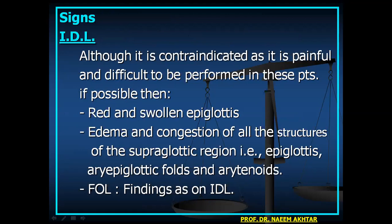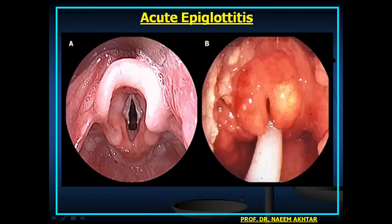if possible, indirect laryngoscopy will show a red and swollen epiglottis, with edema and congestion of all supraglottic structures: the epiglottis, peri-epiglottic folds, and arytenoids. Fiber optic laryngoscopy shows the same findings. In acute epiglottitis, you can see edema of the epiglottis — this is a normal larynx compared to acute epiglottitis with a red and swollen epiglottis.